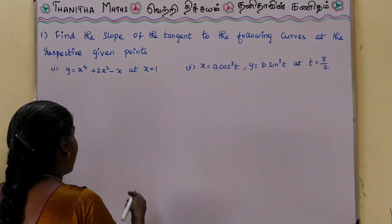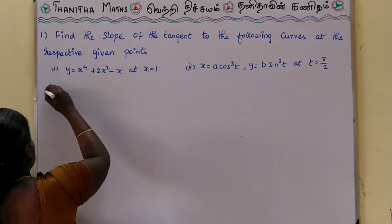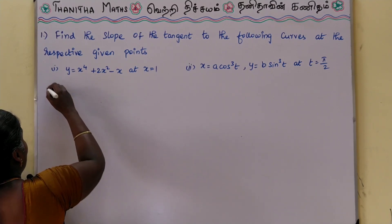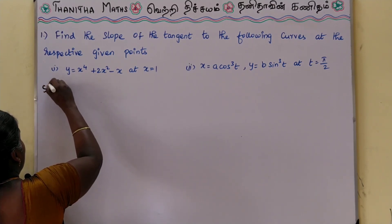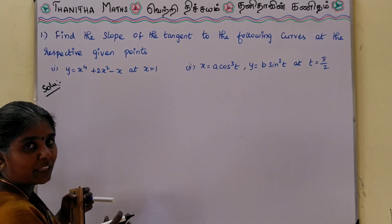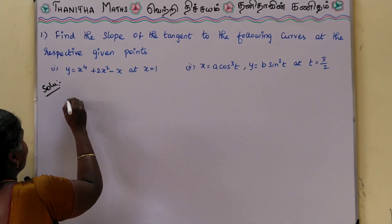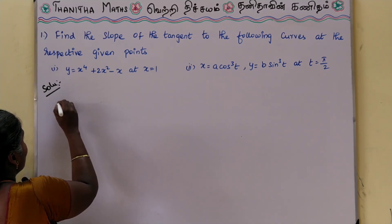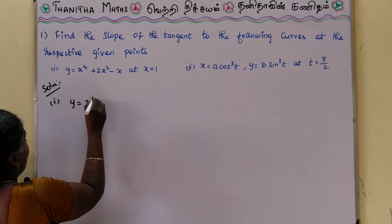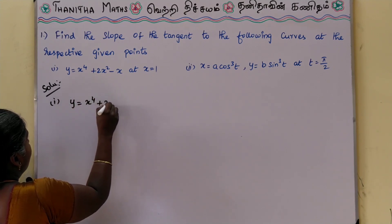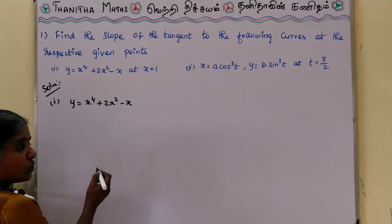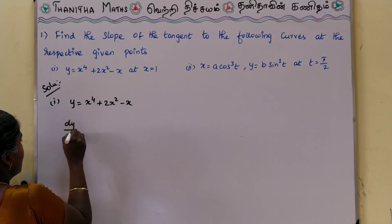We will see how to solve the slope. First, we will differentiate the slope, then we will substitute the point in the slope. The equation of the first curve is y is equal to x power 4 plus 2x square minus x. Differentiate with respect to x.